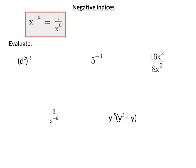In this video, we're going to look at negative indices, and negative indices follow this rule: x to the negative n is equal to 1 over x to the n.